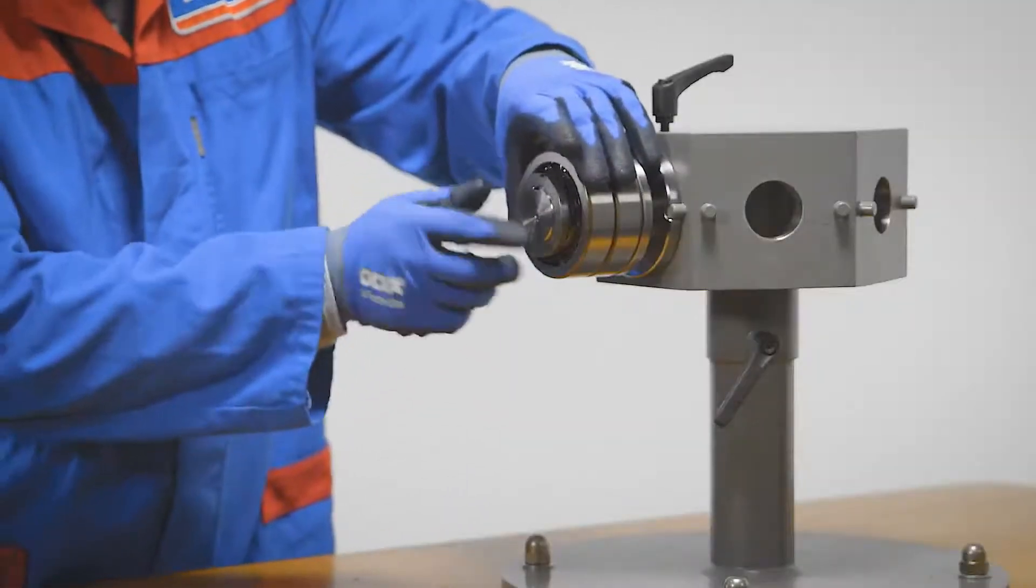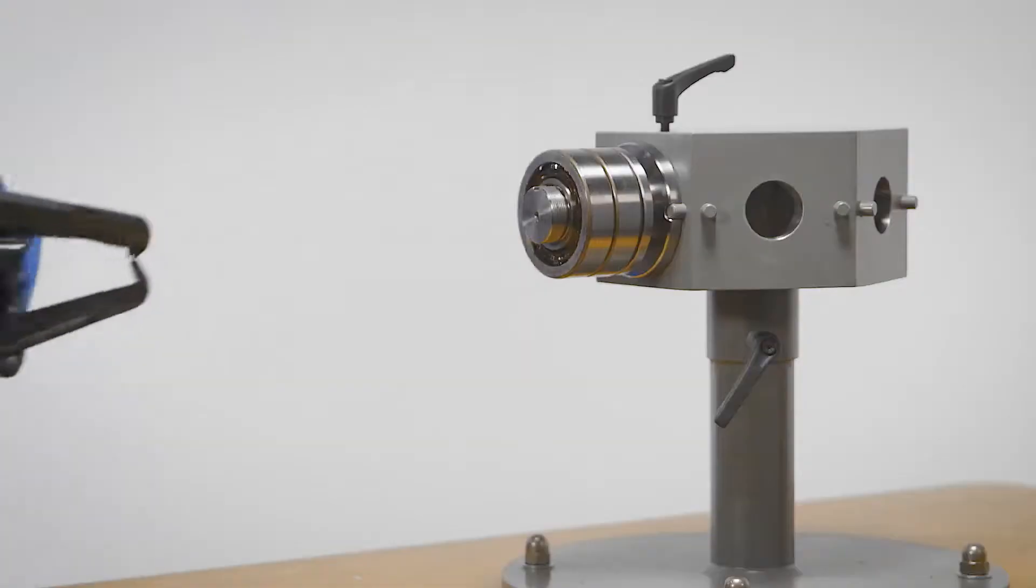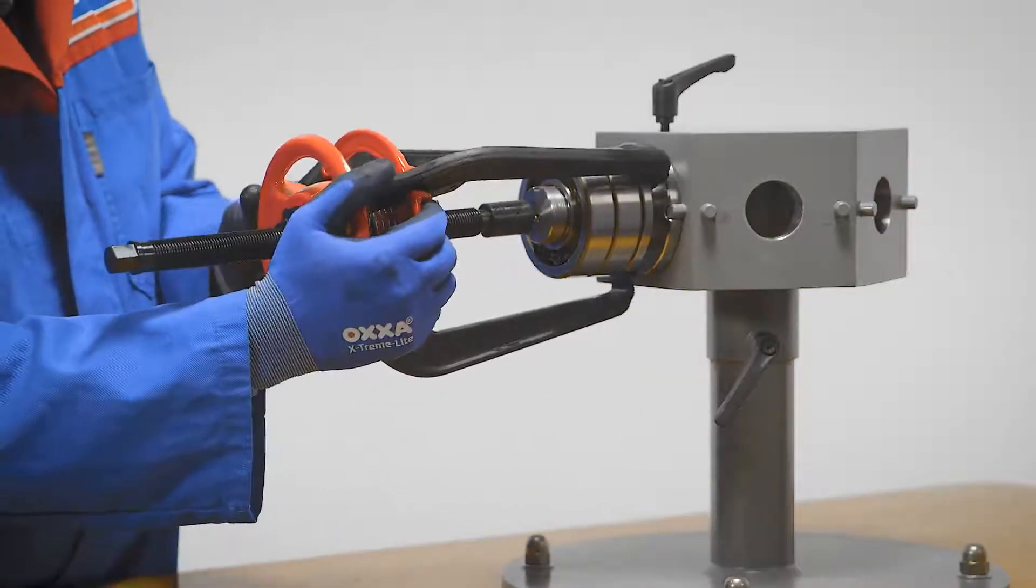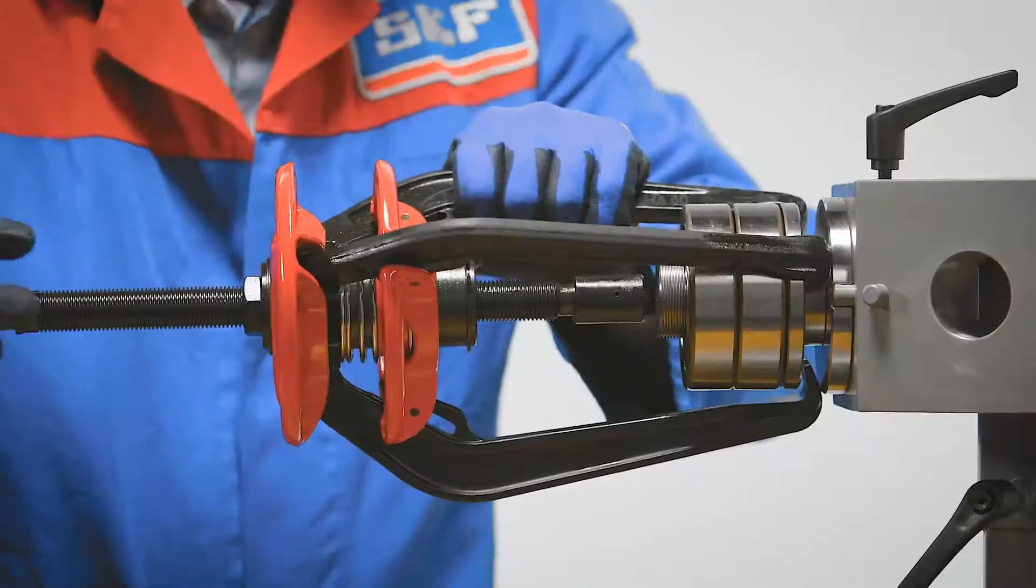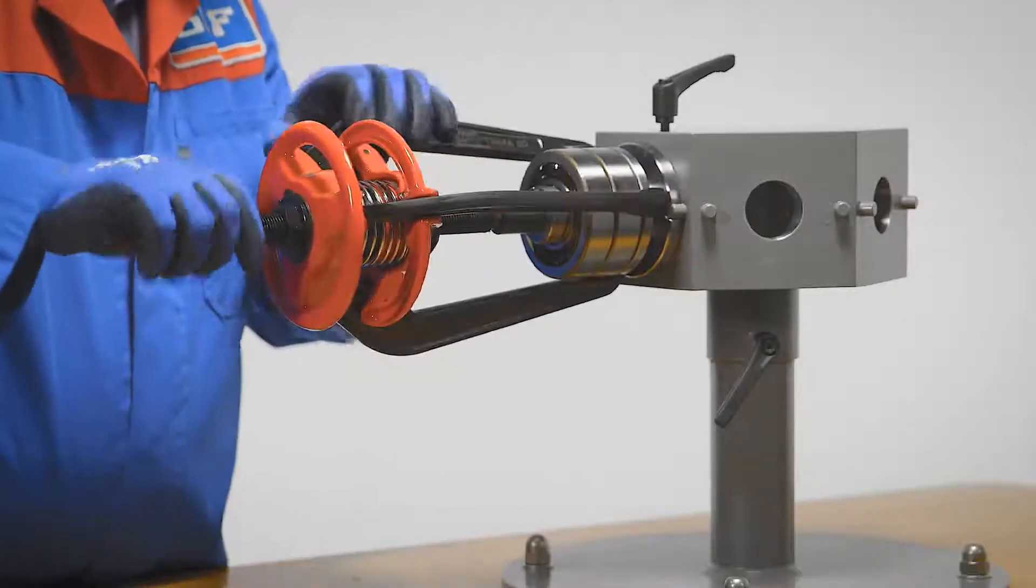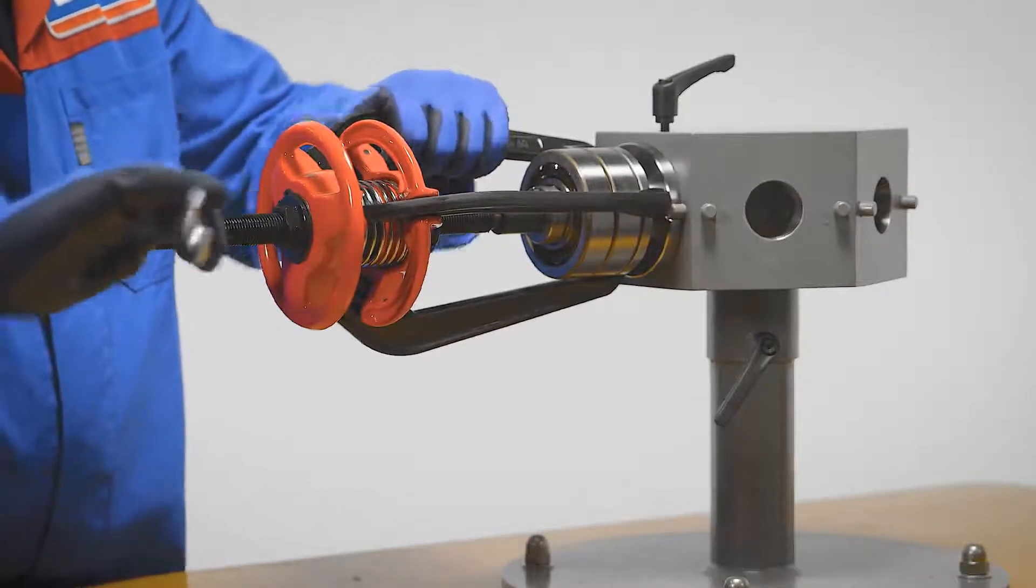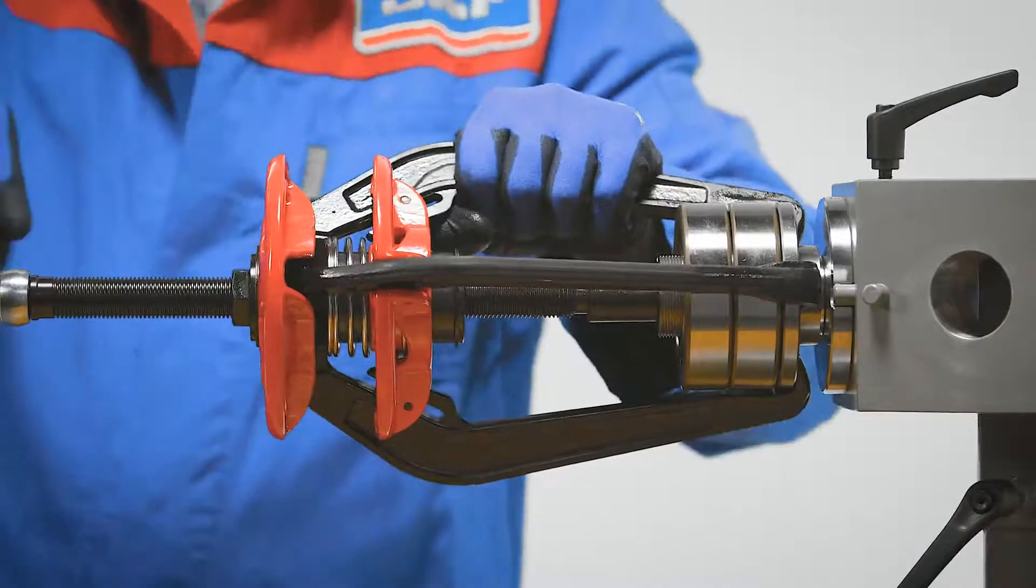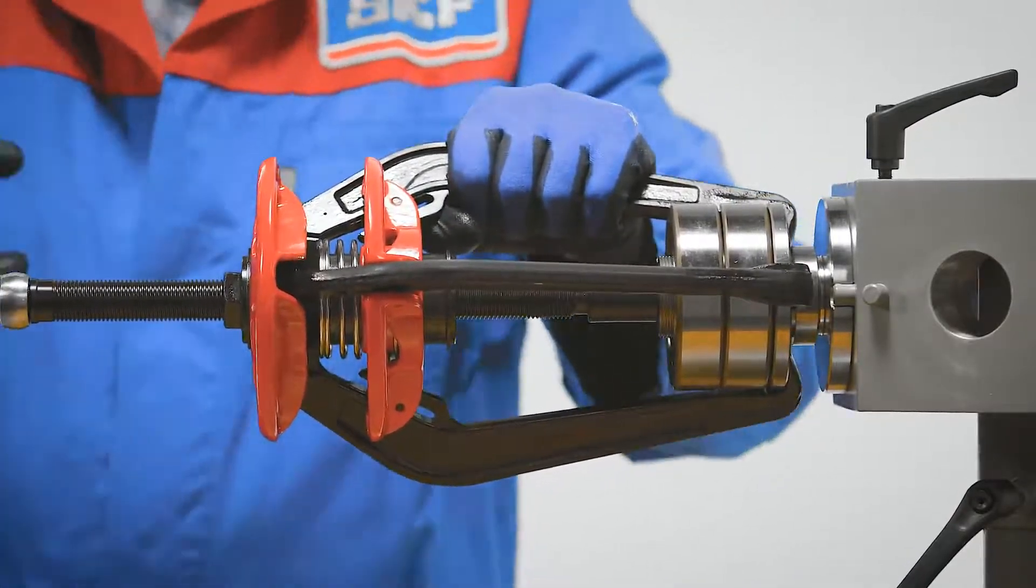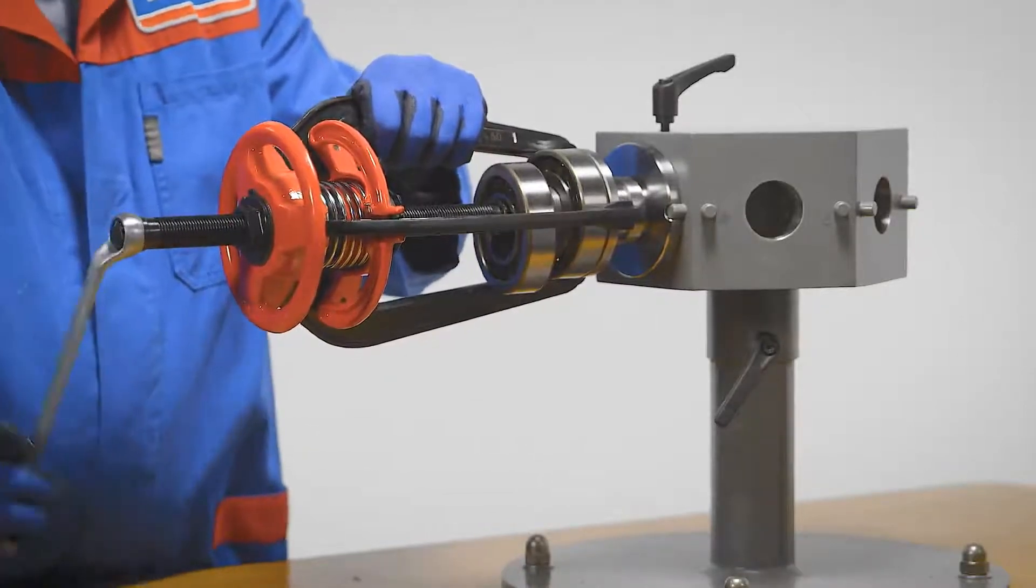To dismount angular contact ball bearings, first remove the lock nut. The most common method to remove the bearings from the shaft is to use a mechanical puller. This application has been designed with a backing ring, ensuring that the puller force is transferred through the ring with the interference fit.